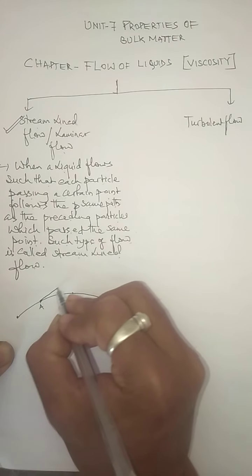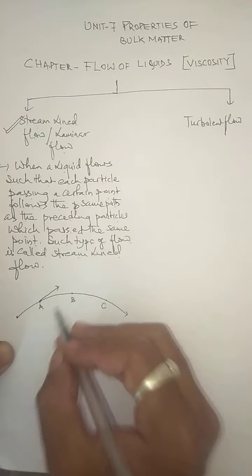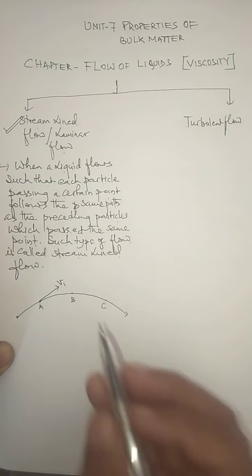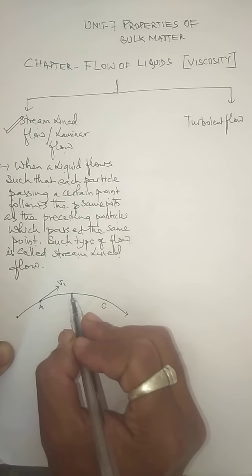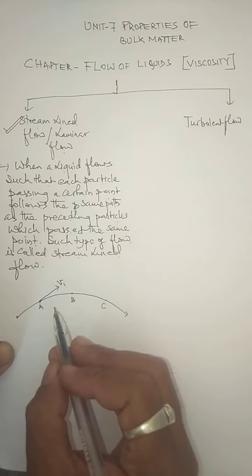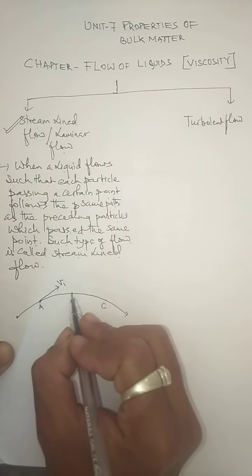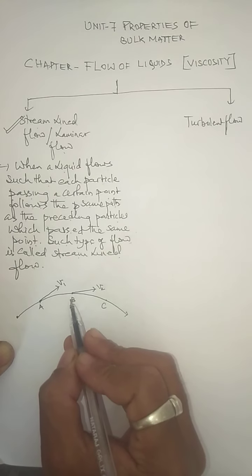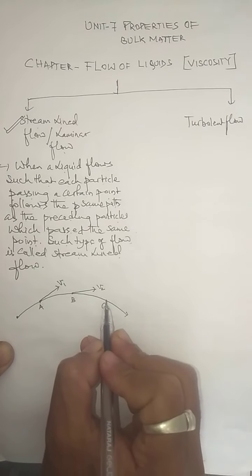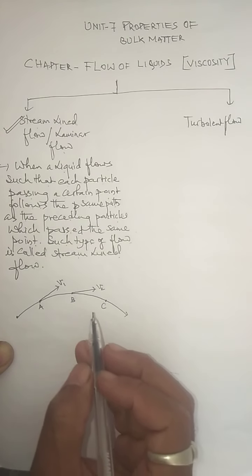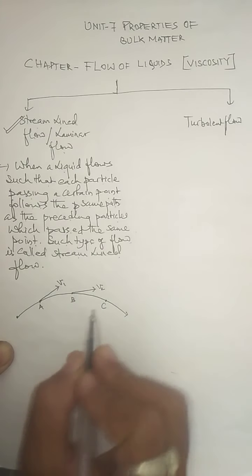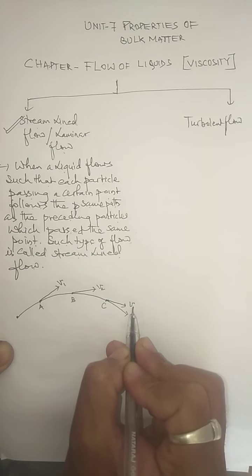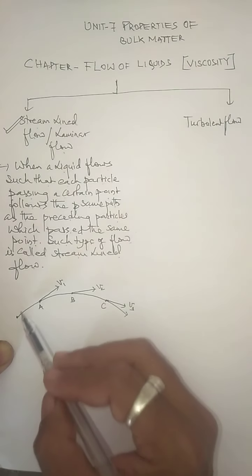At point A, the direction of the liquid particles is given by a tangent drawn at this point. This tangent determines the velocity of the particle flowing at point A, and that is V1. Similarly, at point B, the direction of the particles is also given by a tangent drawn at that point, which determines the velocity of the particle at point B. Likewise, at point C, the velocity of the particle is given by drawing a tangent at that point, and that is V3. So I have taken three different points on the path followed by the liquid.